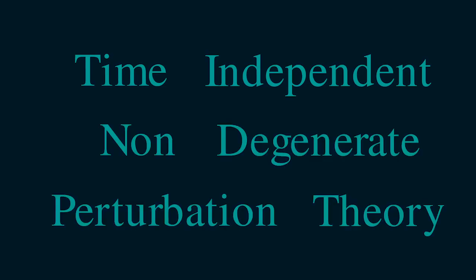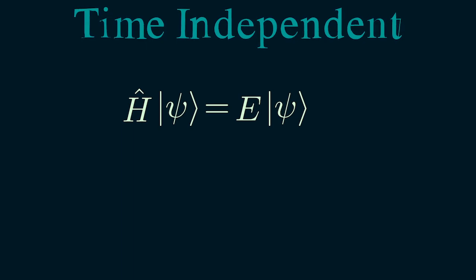So, before the intro, I mentioned a scary sounding term: time-independent and non-degenerate perturbation theory. Let's start off by understanding what it means. The word time-independent refers to the fact that this is a method for solving the time-independent Schrödinger equation, H psi equals E psi, where H is the Hamiltonian and E is the energy eigenvalue.